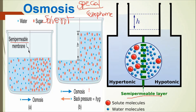Root hairs absorb water from the soil by osmosis. The movement of water from cell to cell is due to osmosis, occurring through either a semi-permeable membrane or a differentially permeable membrane.